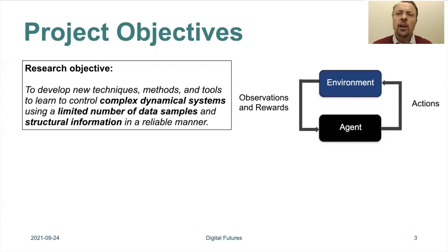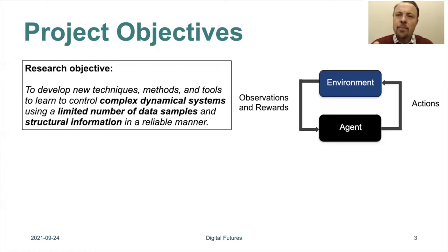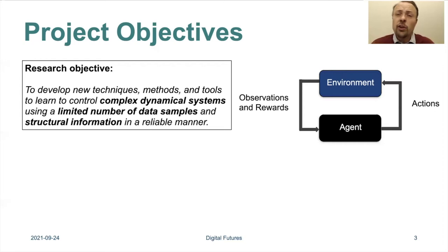We're working on complex dynamical systems — systems that evolve over time where you cannot sample the system too often. You can only do it a limited number of times because it might be too expensive, or because the system can actually get destroyed if you try to do it too many times.